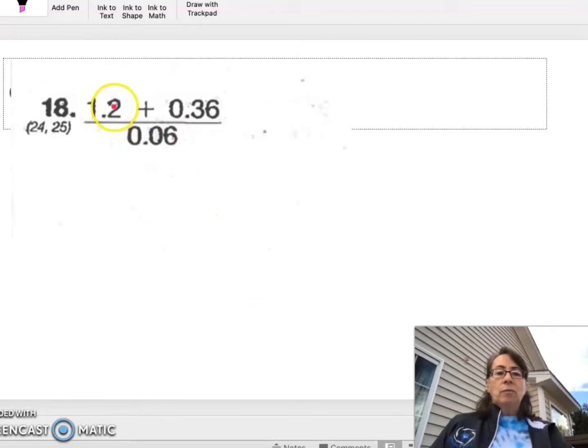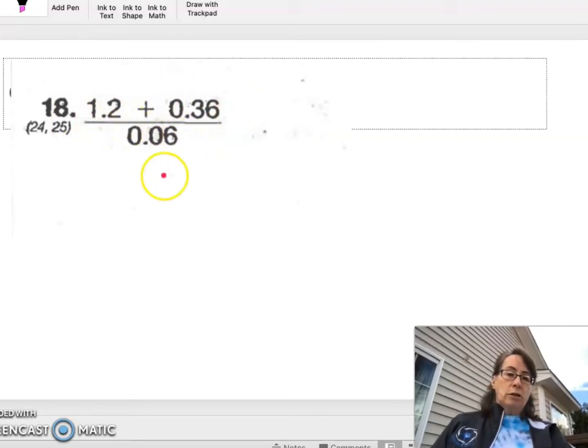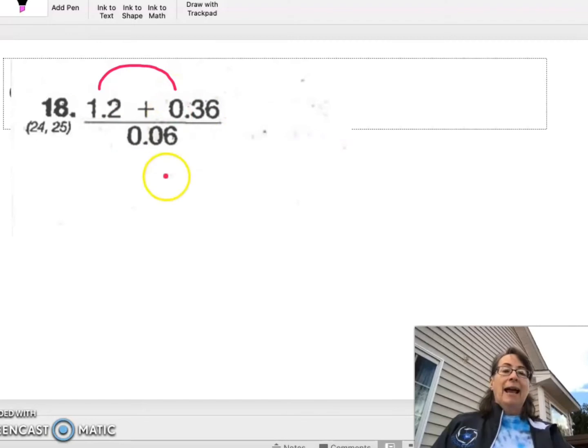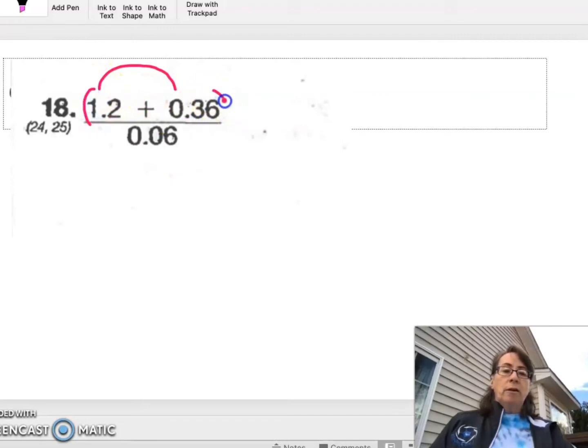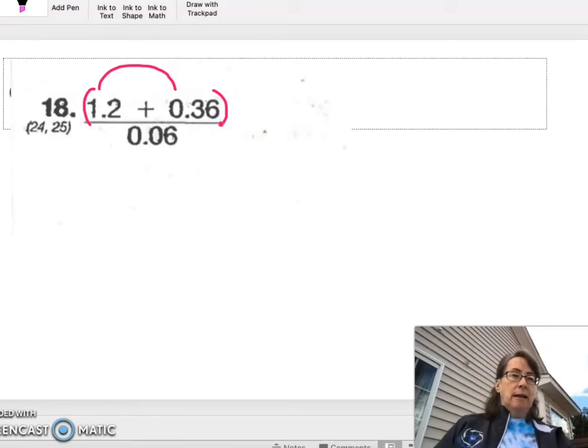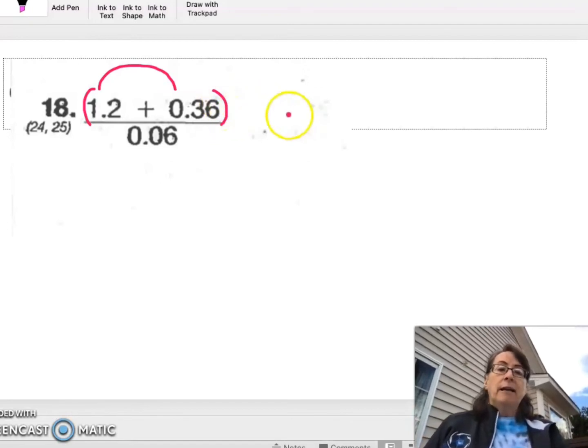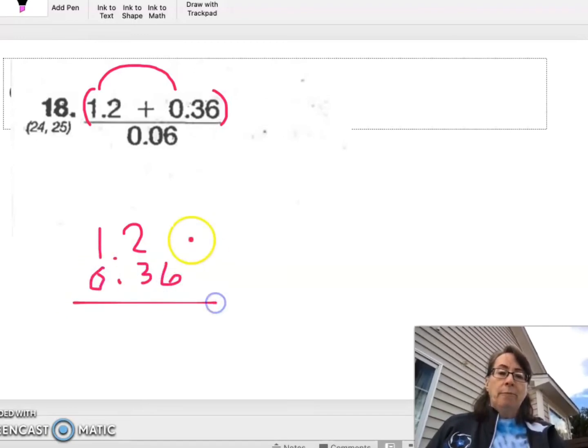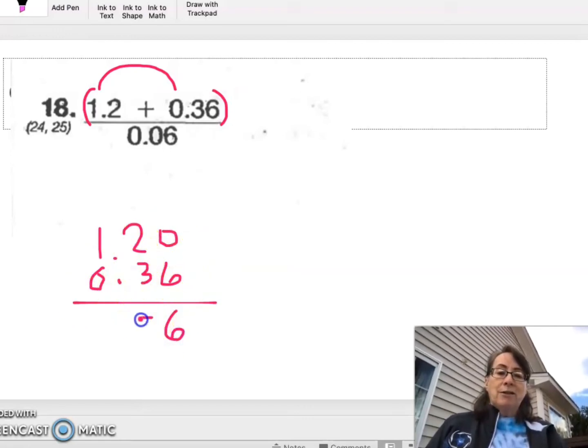Number 18 has 1.2 plus 0.36 divided by 0.06. When I'm doing order of operations on something that looks like a fraction, I'm going to treat the numerator first. Then I'll divide by the denominator. So we're going to say 1.2. When we're adding decimals, we must line up the decimals. 0 plus 6 is 6. 2 plus 3 is 5. So this is going to be 1.56.